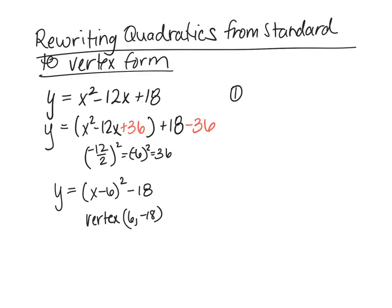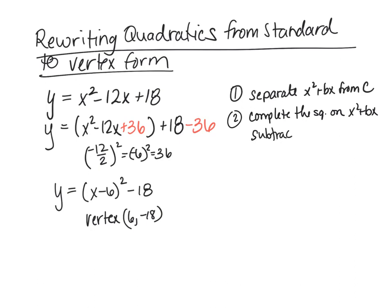So our first step was to separate the x squared and bx from the constant. Complete the square on the x squared plus bx. Now if we have a coefficient on the x squared, we're going to have to factor that out. And then we're going to subtract outside the parentheses that number that we added on the inside of the parentheses. Then we factor the parentheses, and then it's in vertex form.